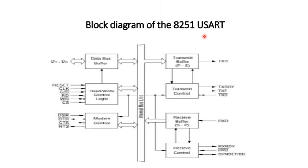This is the block diagram of the 8251 USART — the universal synchronous asynchronous receiver transmitter. This is a programmable chip designed for serial data communication. It is a 28-pin DIP IC and has 5 sections: data bus buffer, read-write control logic, transmitter section, receiver section, and modem control.